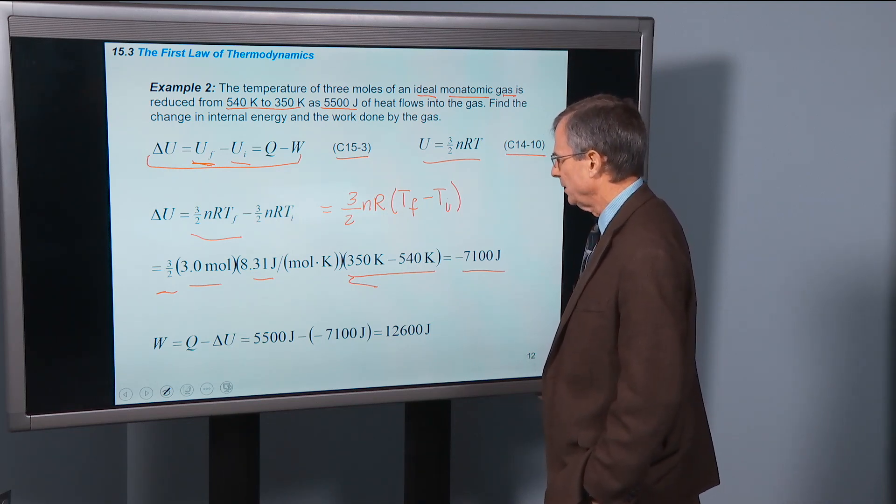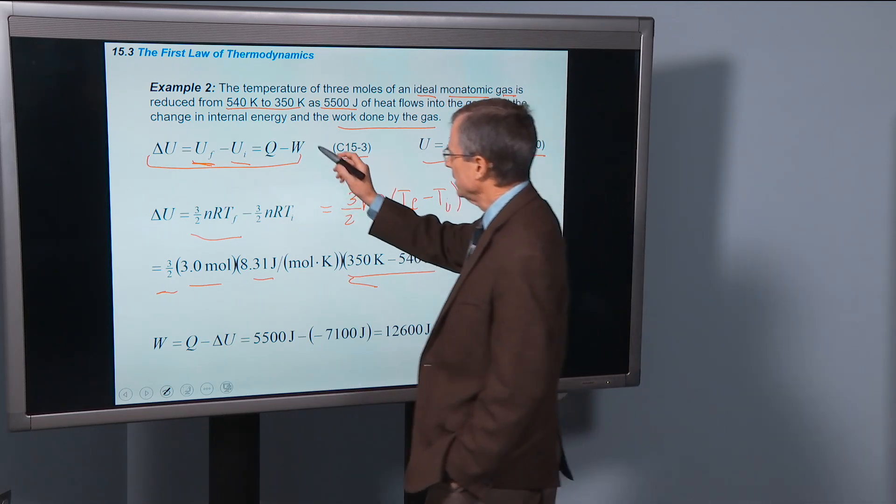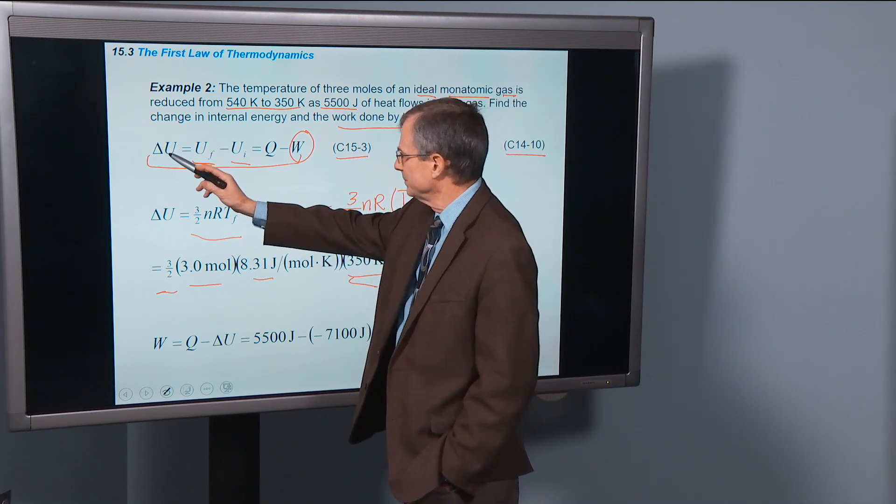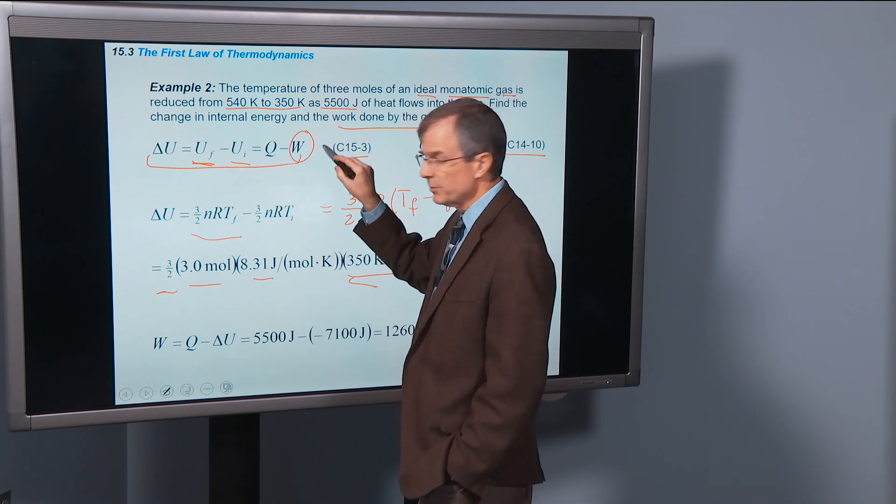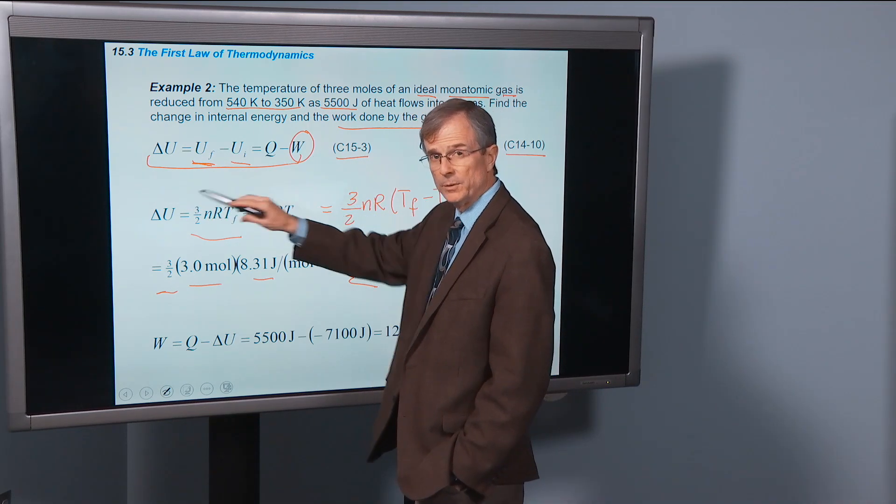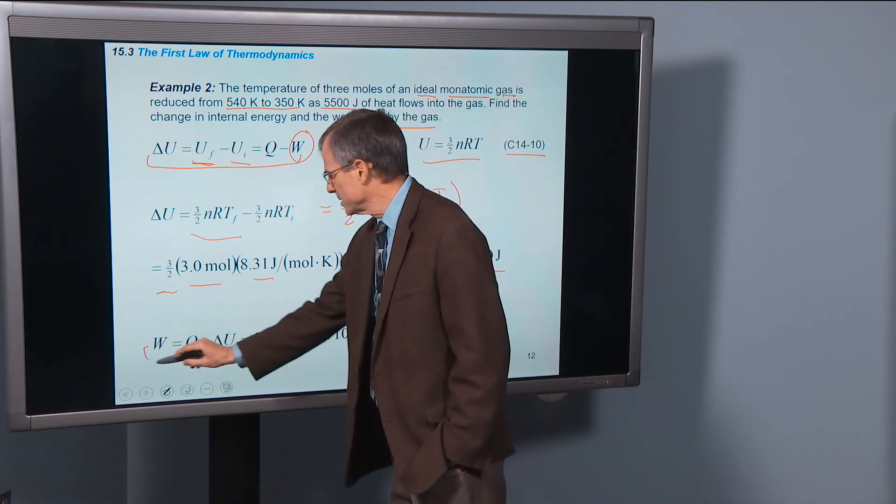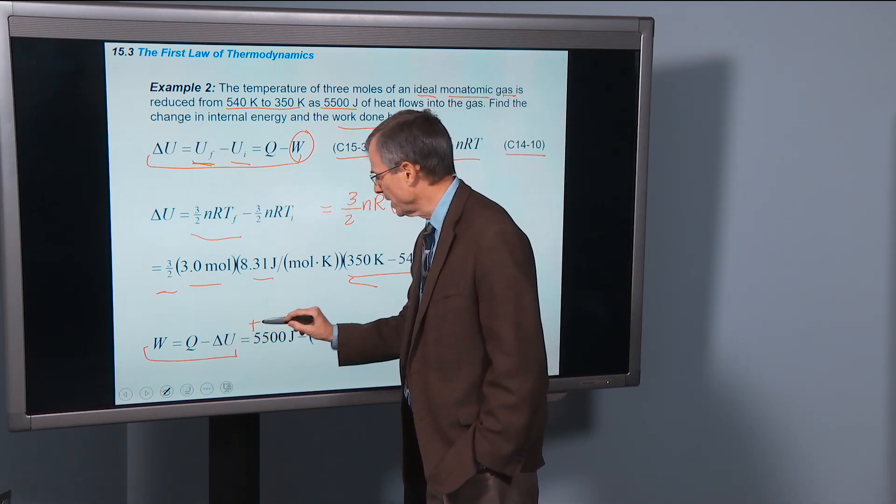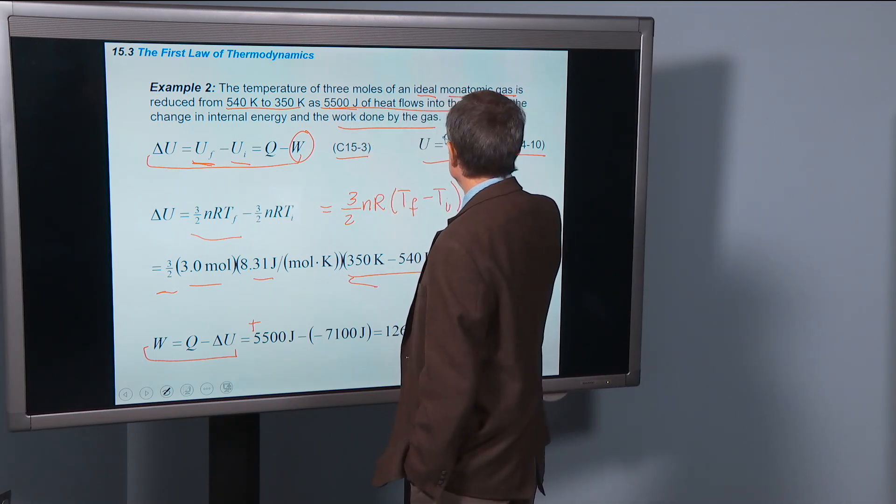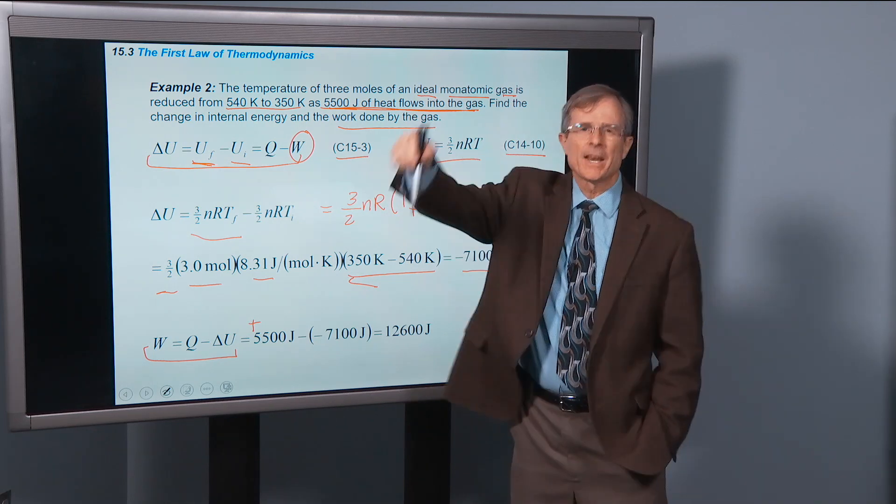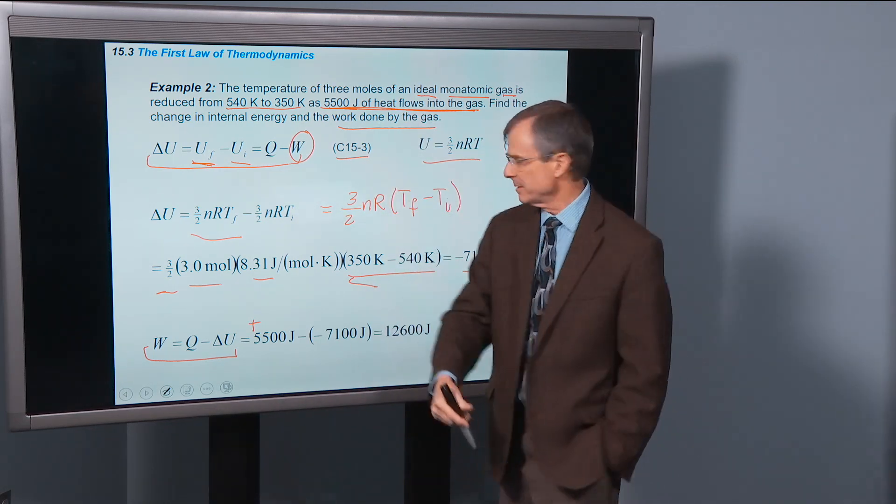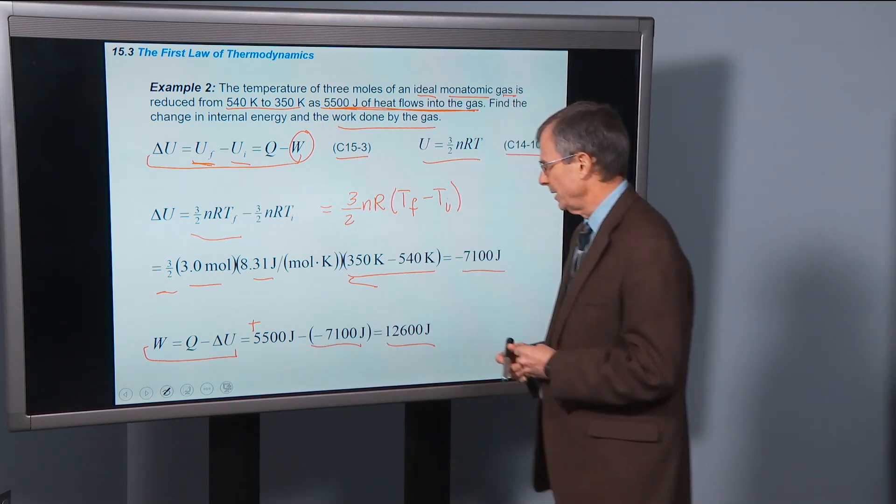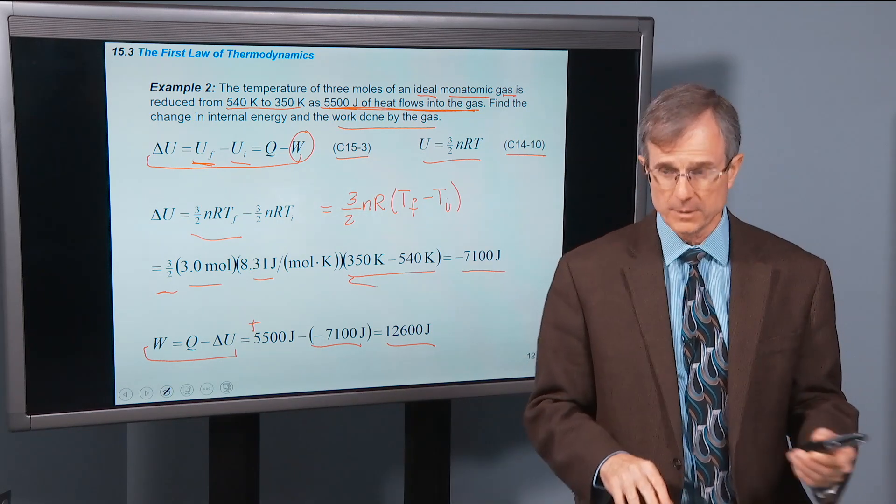And then finally, we can solve for the work done by the gas by solving this equation for W. If I add W to both sides, I'll have W plus delta U equals Q. Then subtract delta U from both sides, and W is Q minus delta U. We know that 5,500 joules are added, so we put this in as a positive. Note here, this amount of heat flows into the gas—it's added to the gas, so Q is a positive number. We just calculated delta U as a negative number. So the work done in order to make that all happen is 12,600 joules.